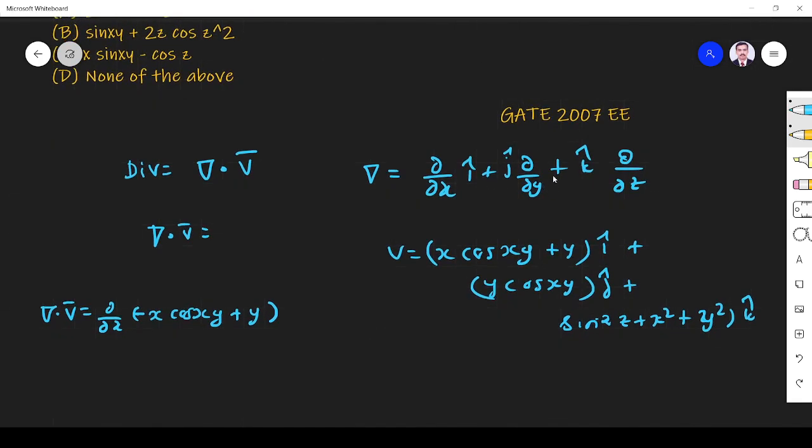Then take dot product between j and j. Plus ∂/∂y (y cos xy). Take dot product between k and k. ∂/∂z (sin squared z plus x squared plus y squared).